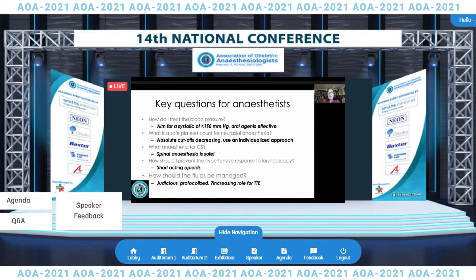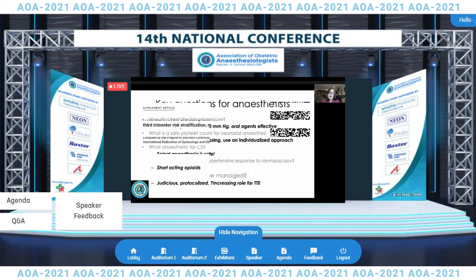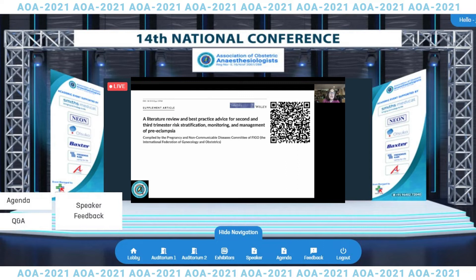To conclude: aim for a systolic of less than 150 mmHg — oral agents are effective. A platelet count of 70,000 is now acceptable for neuraxial anaesthesia, with absolute cutoffs decreasing — '70 is the new 100' — but always use an individualised approach. Spinal anaesthesia is safe for caesarean section with meticulous vasopressor management using phenylephrine. For preventing the hypertensive response to laryngoscopy, use short-acting opioids or the agent you are most familiar with. Fluid management should be judicious and protocolised, with an increasing role for point-of-care ultrasound. A recently published multi-professional review is available via QR code for further reading.